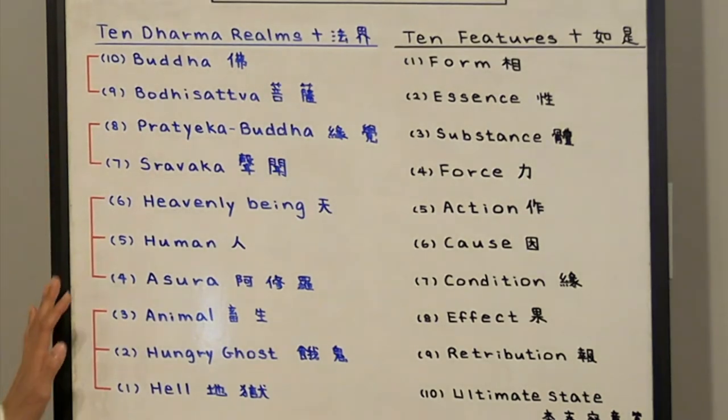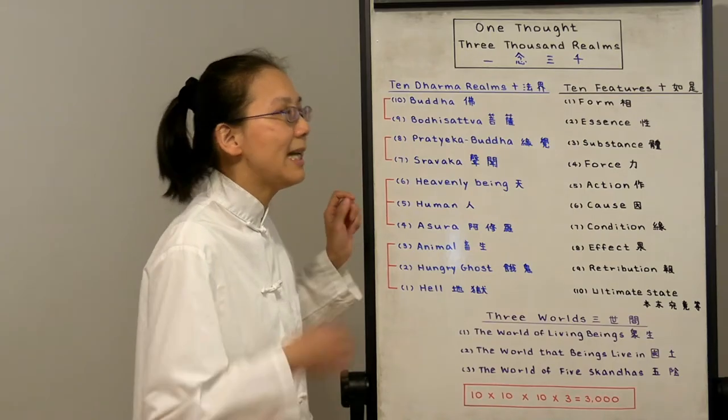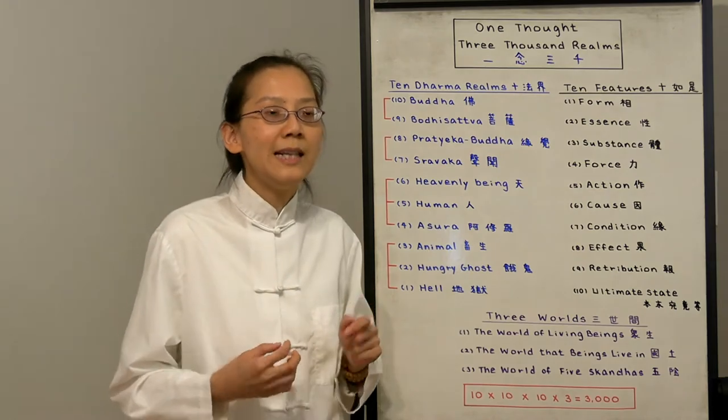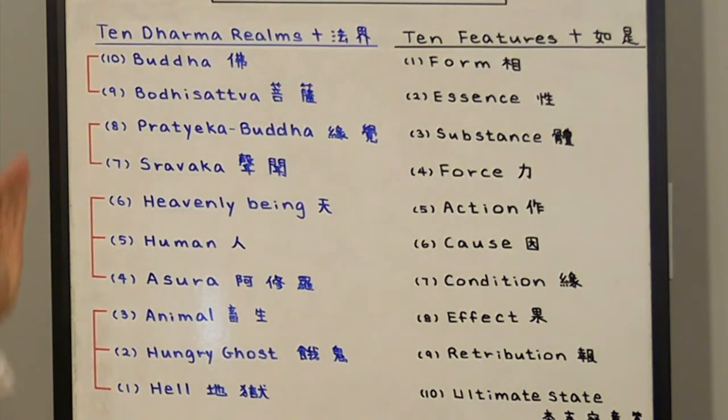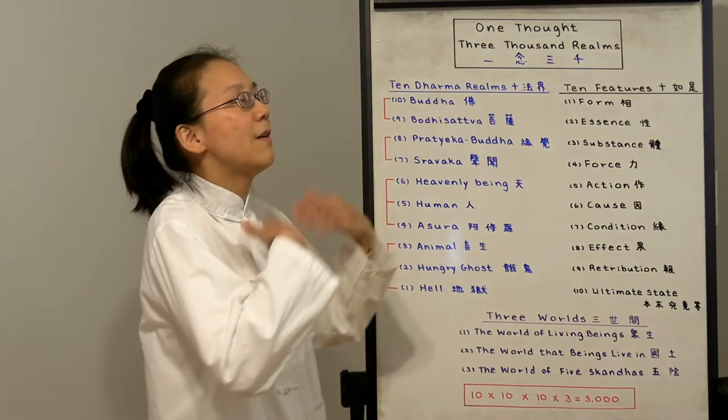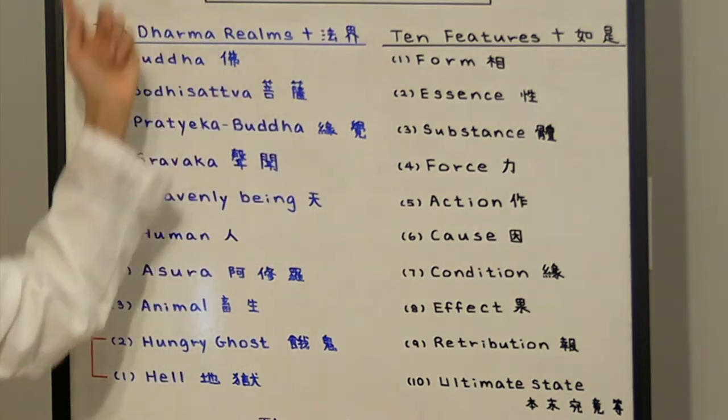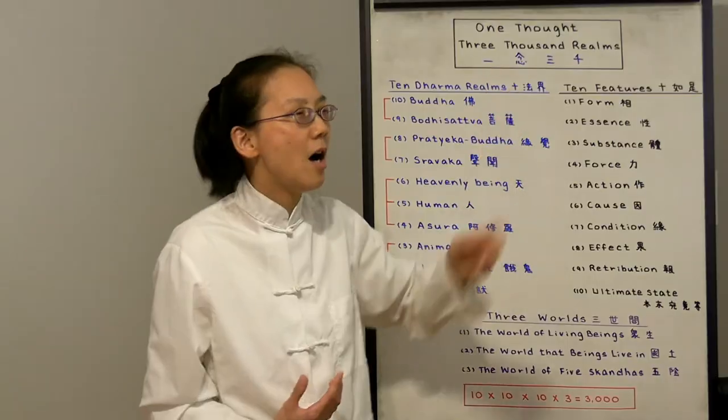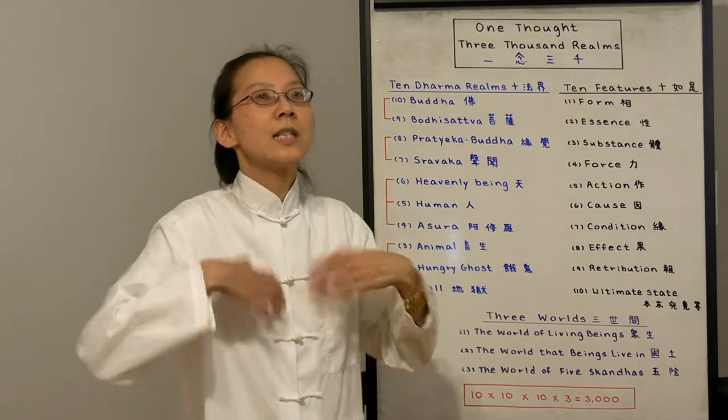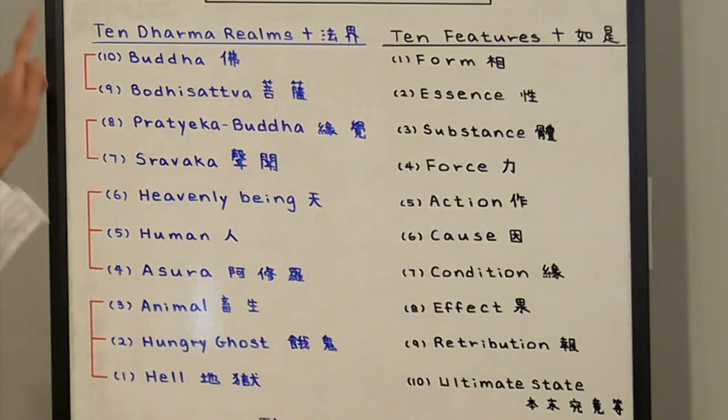These are the 10 places that we can be in. They are mutually imminent and mutually inclusive. One realm consists of the other realm. For example, if I'm an animal, I can be full of love for others and always let others eat first. Then I am a Bodhisattva in the animal realm. So these are all inclusive. Each 10 realm has 10 features related to them. We call it 10 different features of thisness or suchness. We will use hell and Buddha as contrasting examples.